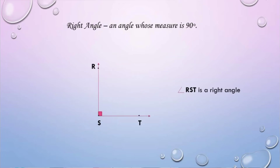Right angle — it is an angle whose measure is 90 degrees. So we have angle RST is a right angle.